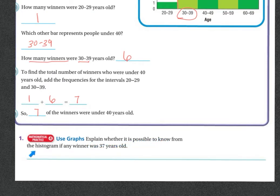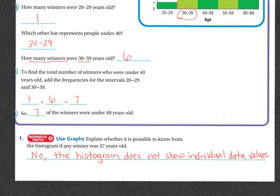Explain whether it is possible to know from the histogram if any winner was 37 years old. No, because the histogram does not show individual data values. It shows the intervals or the ranges.